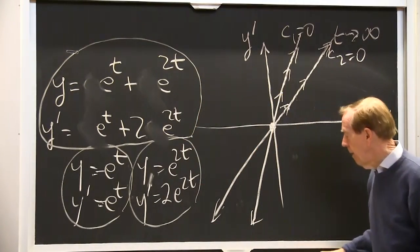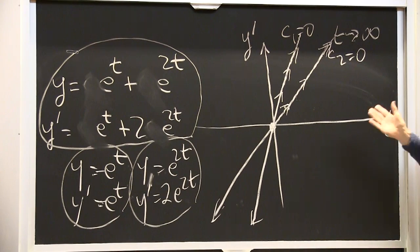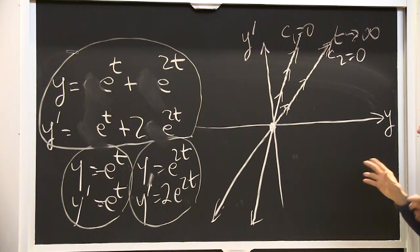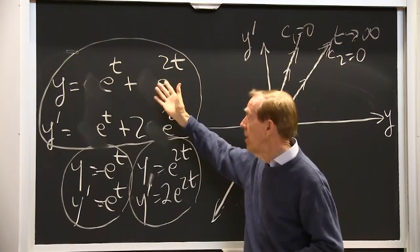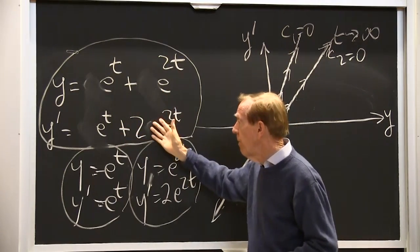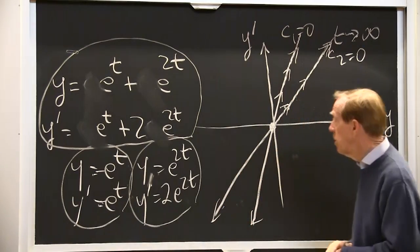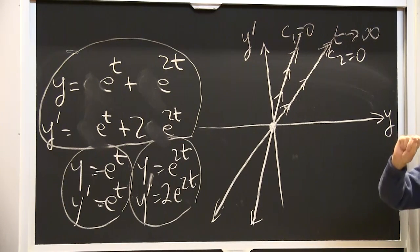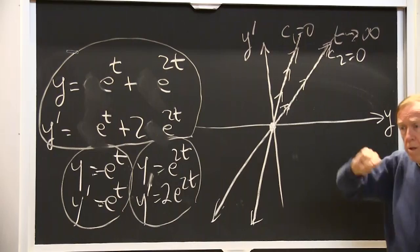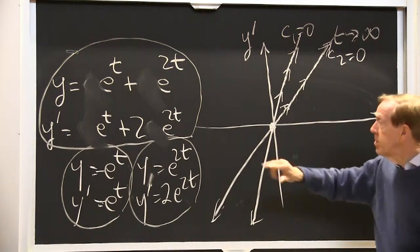Now I have another solution, y and y prime. I want to put it in the phase plane. At every value of t, that's a point, a value of y. This is a value of y prime. I plot the points y and y prime. And I look at the picture. As t changes, I'll travel along the solution curve in the phase plane.